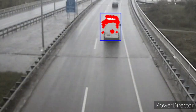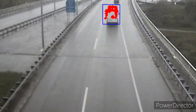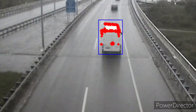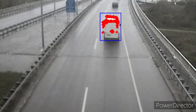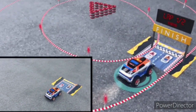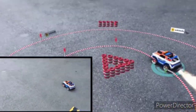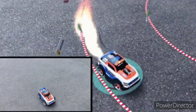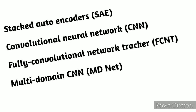3. Object tracking: it has applications in video and real-world interactions where specific objects are tracked for their motion in the video. One such application is in autonomous driving systems such as self-driving vehicles from companies like Tesla. Models like stacked autoencoders (SAE), convolutional neural network (CNN), fully convolutional network tracker (FCNT), and multi-domain CNN (MDNet) are used for this purpose.